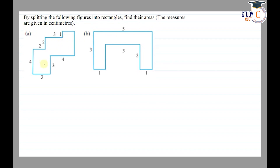We will split it. Firstly, we will split it here. This side is 3, and the opposite side is 3. The rest part is 1, because the complete side is 4. We will split it here. So this part is 1 and this part is 2. We split it here as well. So this is 3, and this is 3 — just opposite. The sides are 1, 2, and 1, making a complete side of 4.